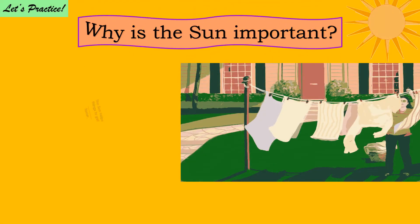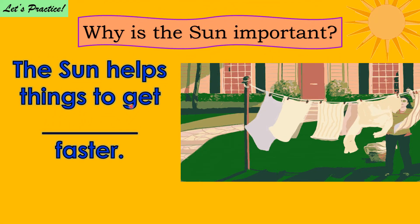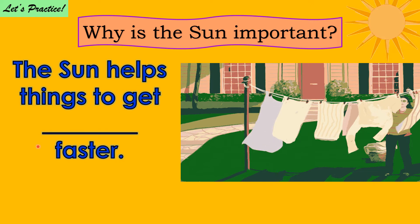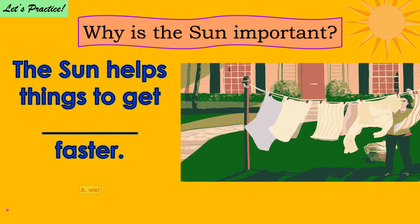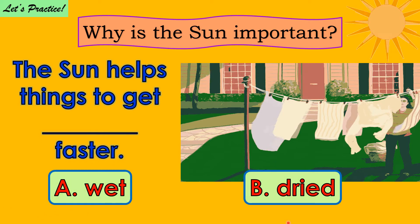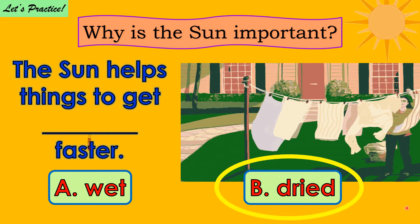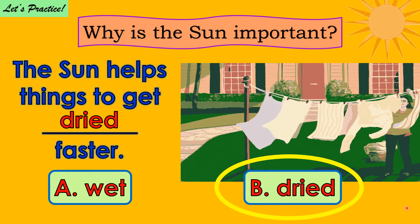Why is the sun important? The sun helps things to get blank faster. Choose between A, wet, and B, dried. One, two, three. Good job! The answer is dried.